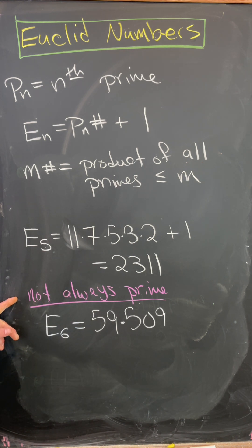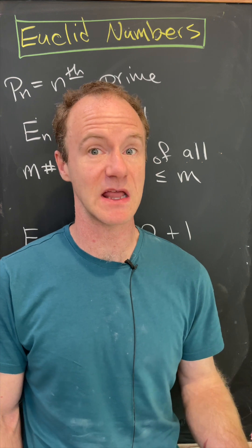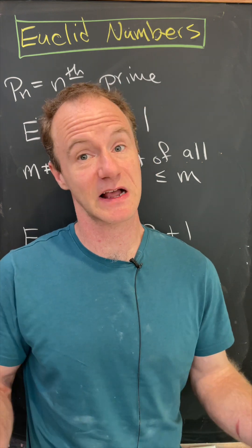Now, these numbers are not always prime. In fact, E6 factors as 59 times 509. A big open question is: are there infinitely many prime Euclid numbers? But like I said, that's unknown.